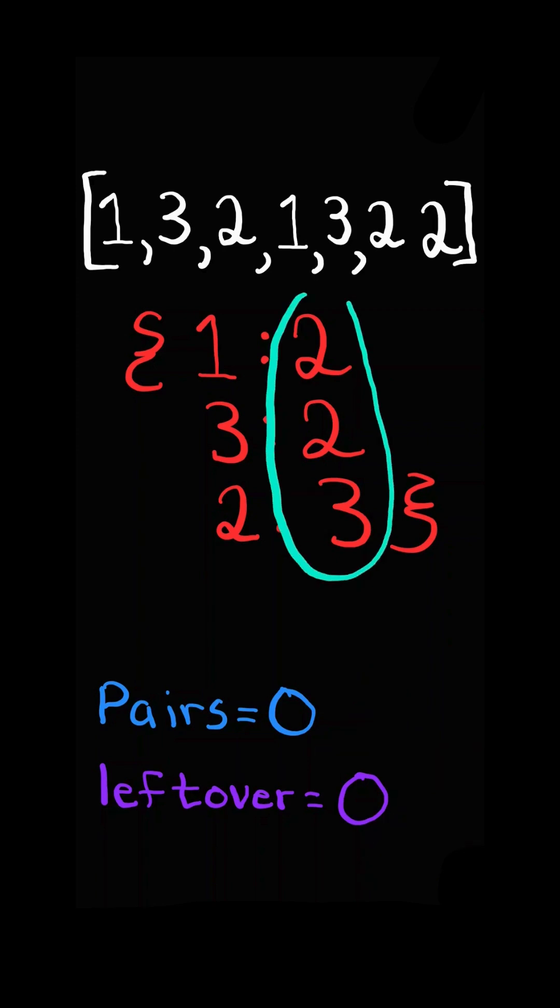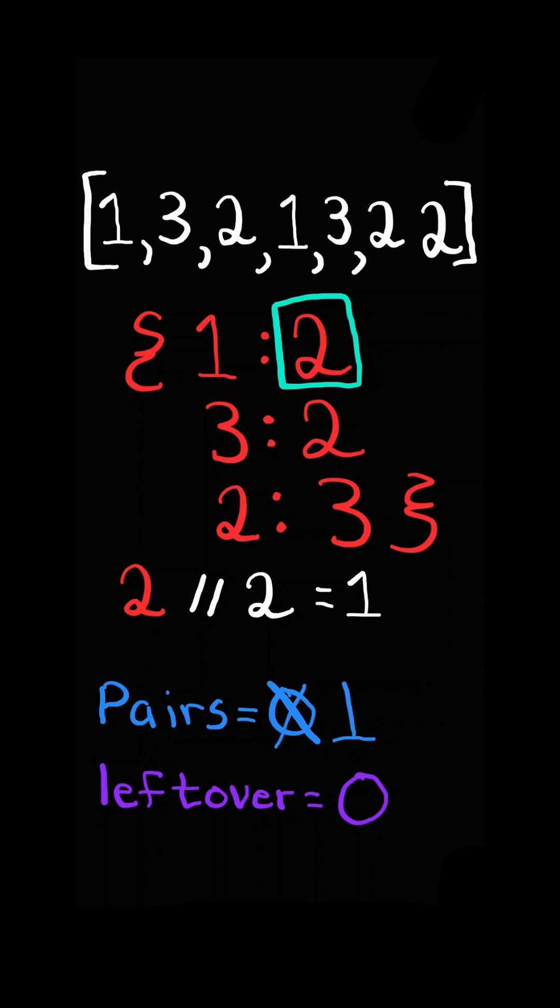We then iterate through the counts in the dictionary. We take the count and integer division it by two. This gives us the amount of pairs we can create.